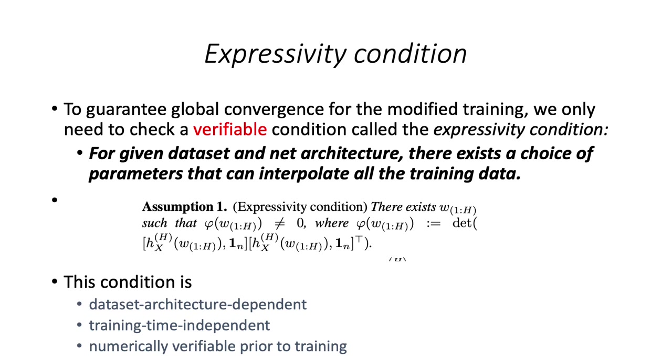And say if there exists a choice of parameter that can interpolate all the training data, in the sense that the rank of the last hidden layer output is full rank, equal to the number of data points. Or we can look at the determinant of the linear space spanned by the last hidden layer H and the bias 1.